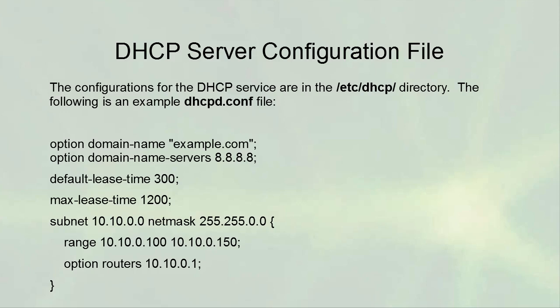The DHCP server configuration is in the /etc/dhcp directory. In the example dhcpd.conf file, at the top you have the option domain-name, where you specify your domain name, and option domain-name-servers, where you specify the DNS servers. You also set a default-lease-time — in this example 300 seconds — and a max-lease-time of 1200 seconds. Those are very short-term leases: a default of five minutes and a maximum of 20 minutes. Obviously you'd want much longer times in production.